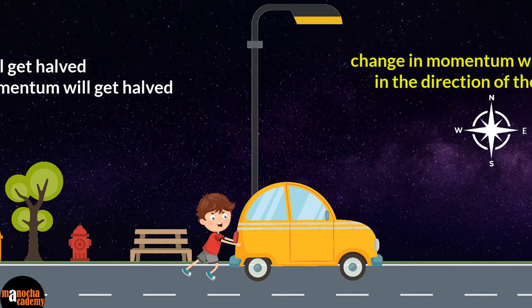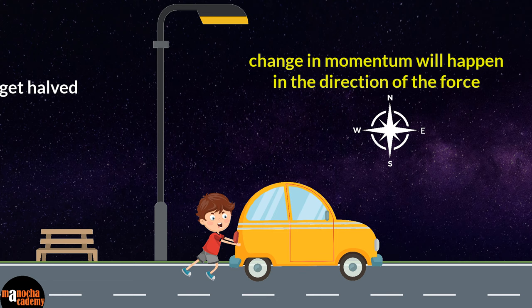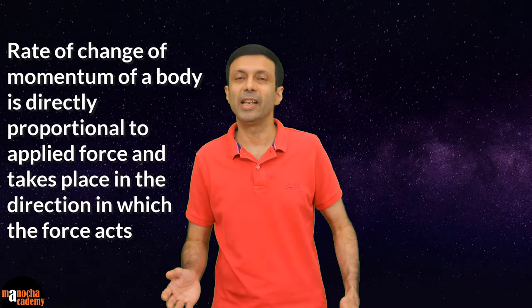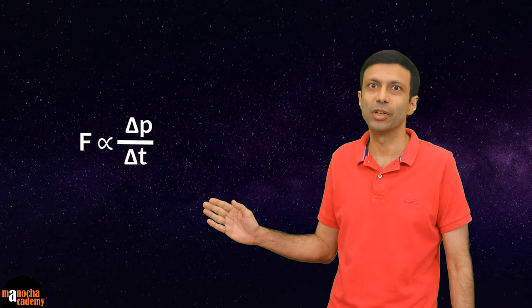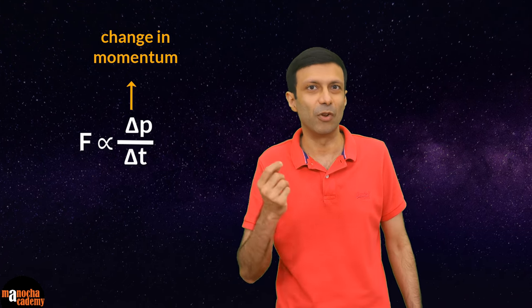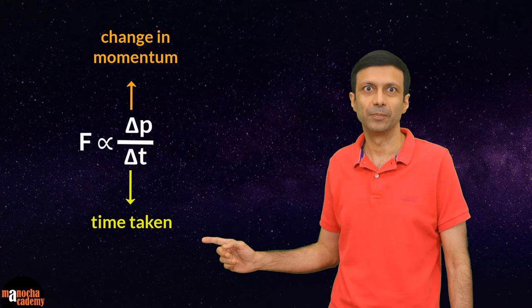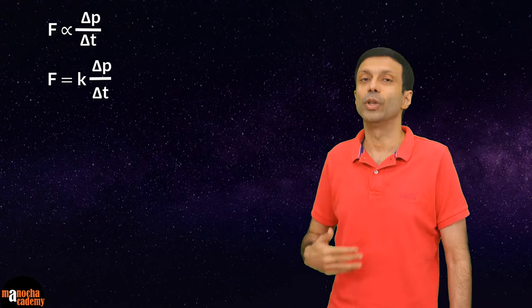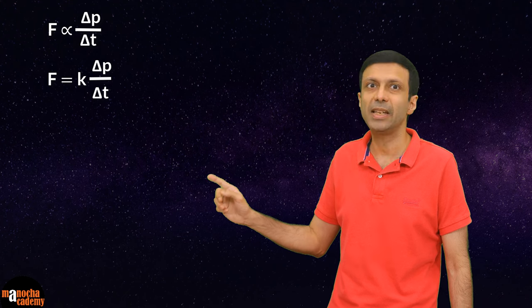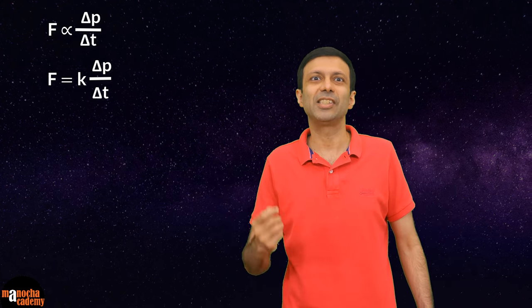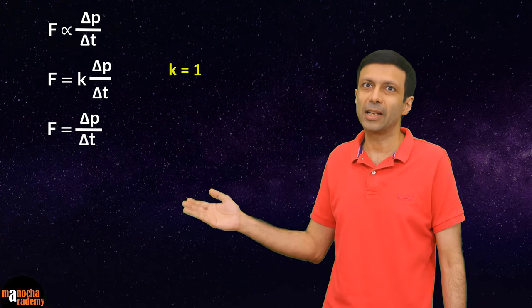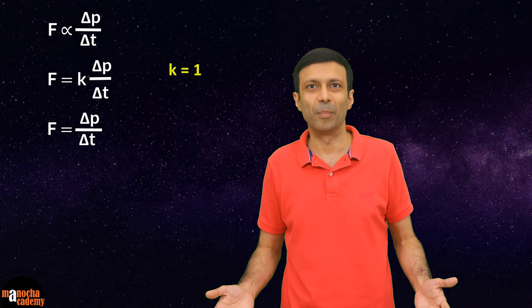The change of momentum happens in the direction of the force — if you push east, the momentum change is eastward. Mathematically, Newton's second law is: F ∝ Δp/Δt, where Δp is the change in momentum and Δt is the time taken. We convert this to an equation using a proportionality constant k: F = k·Δp/Δt. Fortunately, the SI unit of force (the newton) is defined so that k = 1, giving us simply F = Δp/Δt.